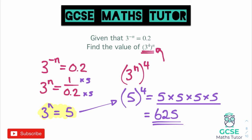There we go — the answer is 625. That was probably the hardest out of the bunch: we did the reciprocal of the other side to remove the negative power, worked out 1 divided by 0.2 to get the value of 3 to the power of n, then did a switch of the powers so we could substitute the number 5 in and work out that value. There are a couple of practice questions for you to have a go at.